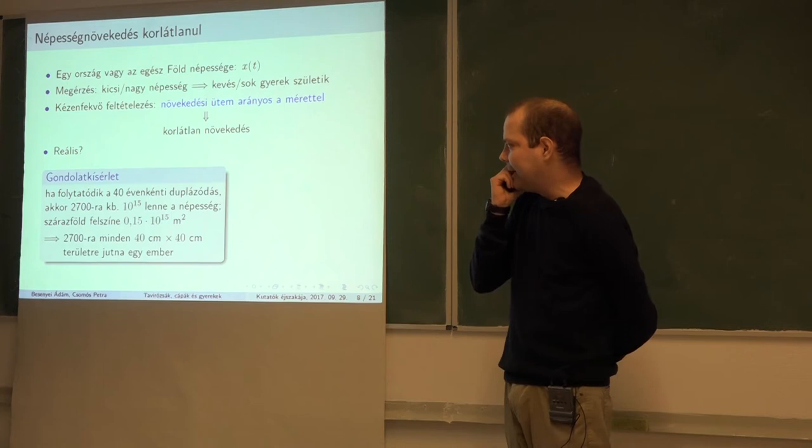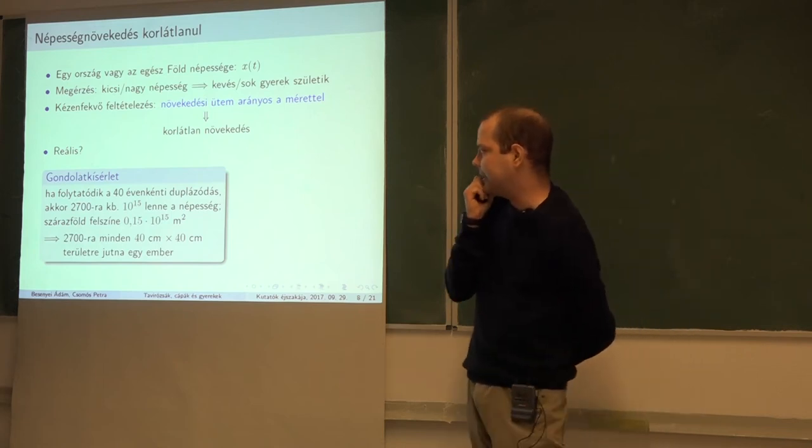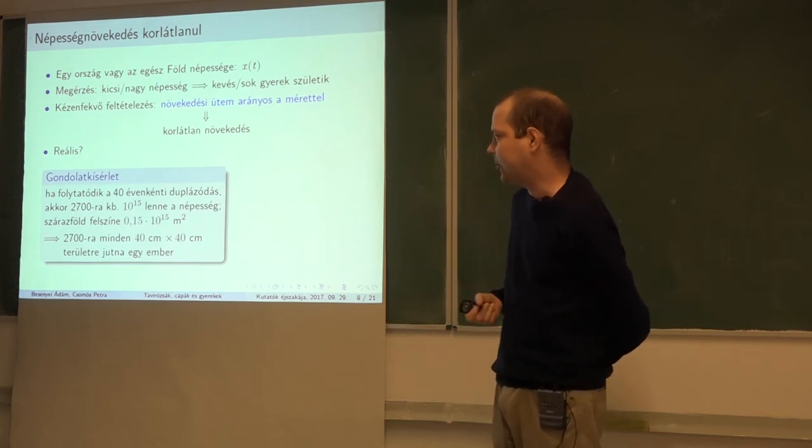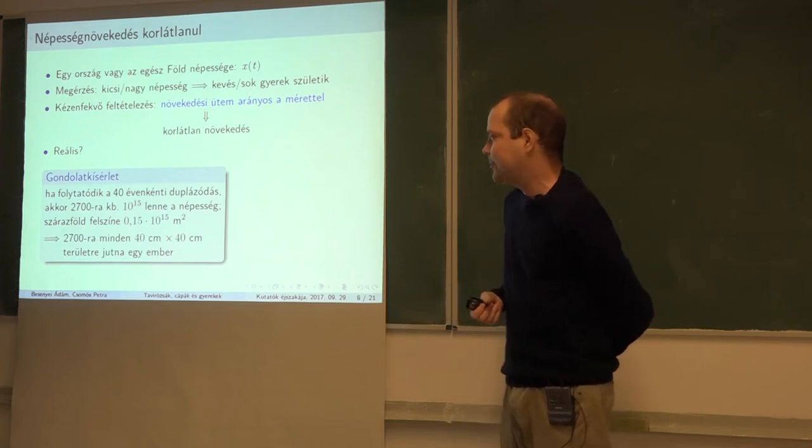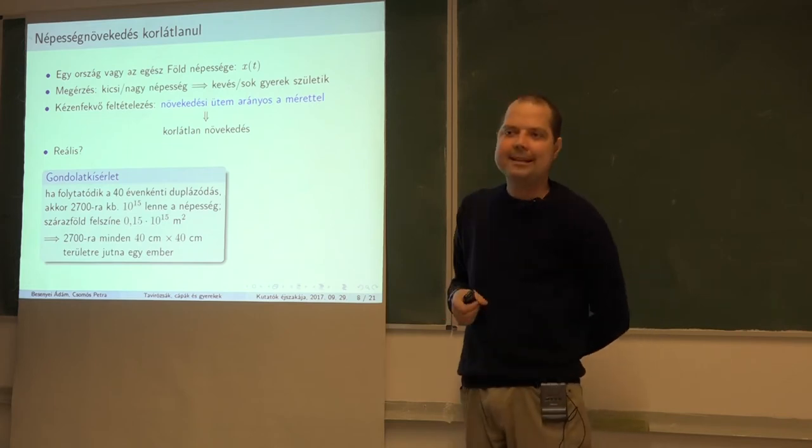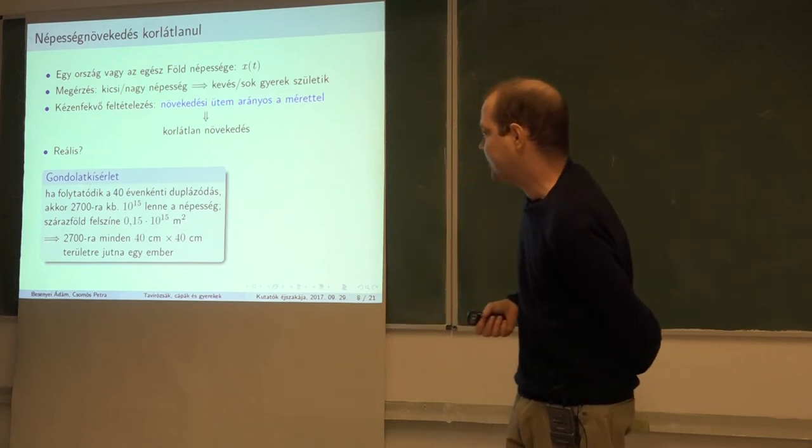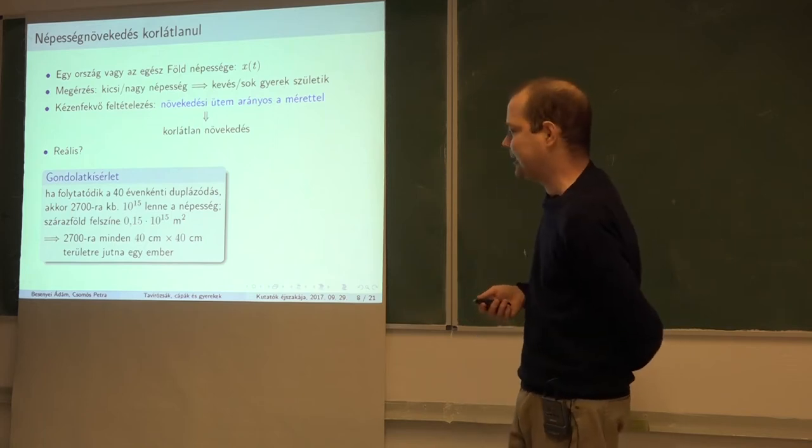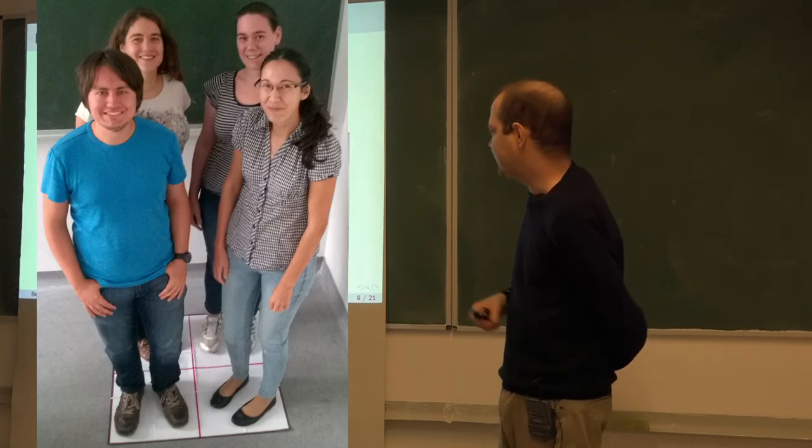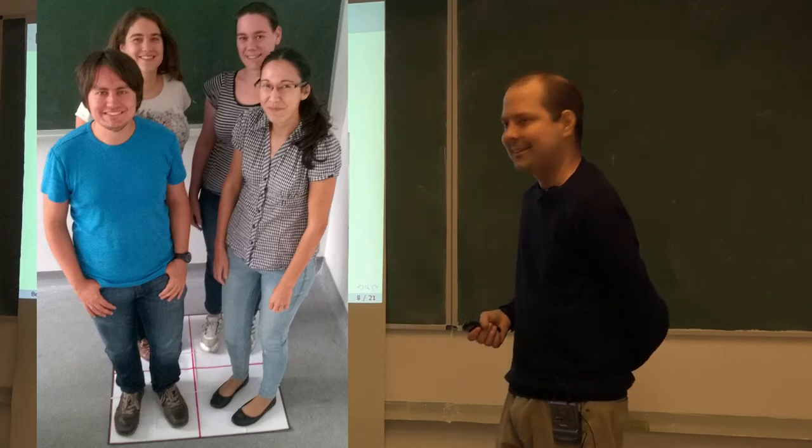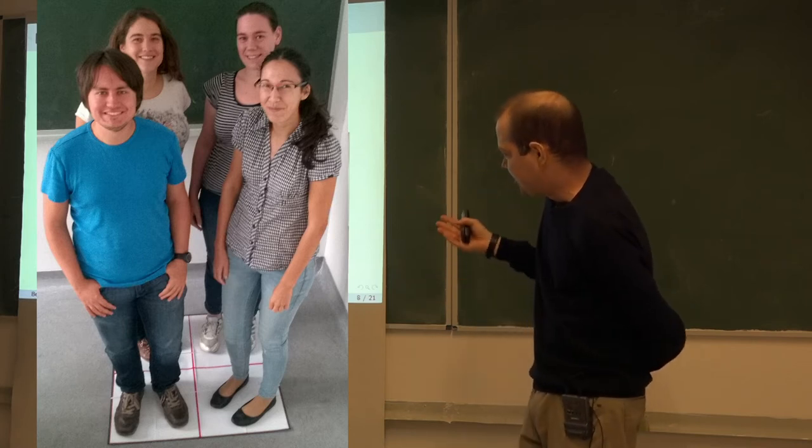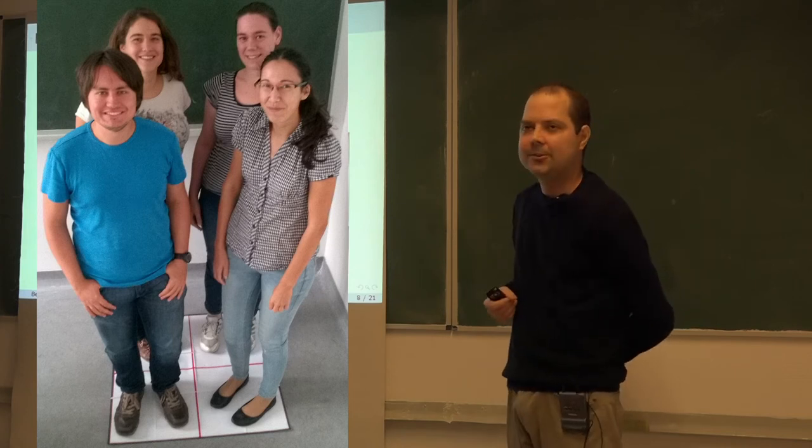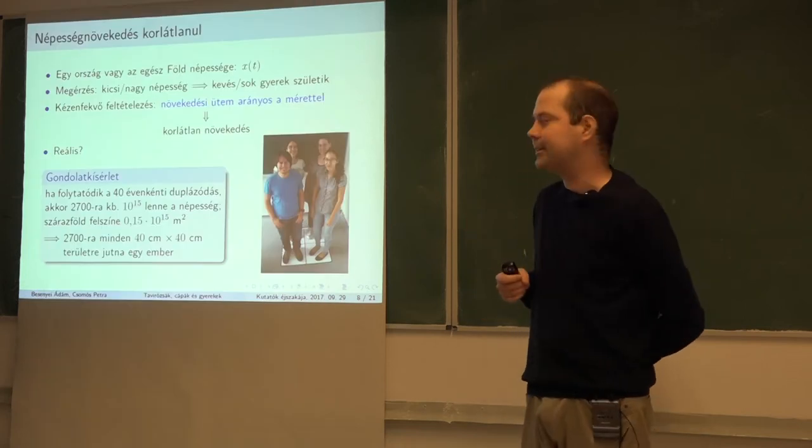Mi lenne akkor, ha ez a 40 évenkénti duplázódás folytatódna? Tehát ezt a gondolatkísérletet eljátszuk, hogy 40 évenként folytatódik a duplázódás, akkor 2700-ra 10-15-ön lenne a népesség. Itt is lehetne egy házi feladat, hogy a 10-15-tel milyen szavunk van. A 10-15-ön az a biliárd, nem a játék, hanem ez a biliárd. Ezer billió egyébként. Szóval akkor ezer billió lenne a népességünk, és a szárazföldi felszín az olyan 0,15-szöl-10 a 15-diken négyzetméter. Most akkor, hogyha osztunk-szorzunk, körülbelül az jön ki, hogy 2700-ra minden emberre egy 40 cm-szer 40 cm-es terület jutna. Hát amikor ezt elmondtam a kollégáknak, akkor ők gyorsan már arra gondoltak, hogy hát ide jön megvenni azt a 40x40 cm-es területet. Úgyhogy négy kollégának már sikerült eladnom az ő területét, le is fotóztuk. Hát így nézze ki, 2700-ra körülbelül így kellene a szárazföldön állni a népességünknek. Na persze ez csak egy gondolatkísérlet.